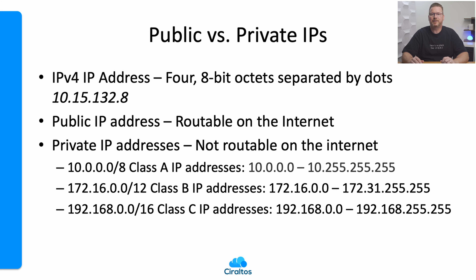There are three blocks of private IP addresses we can use. The first is a Class A IP block that starts with 10.0.0.0 and includes everything in the 10 network. Large organizations frequently use this range because it can be subnetted into many smaller networks. Next is the Class B private network that starts with 172.16.0.0 and goes to 172.31.255.255. Keep in mind that an IP address starting with 172.32 is a valid public IP — anything outside 172.16 to 172.31 should not be used for private IP addresses.